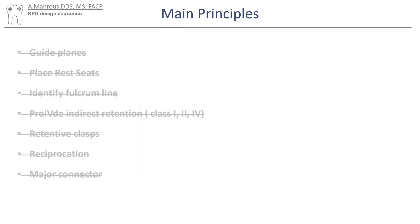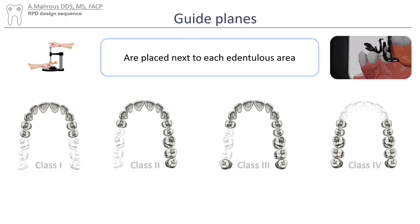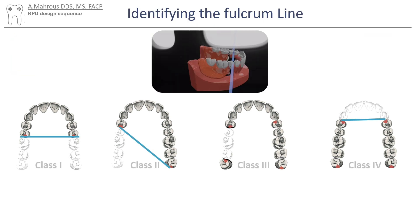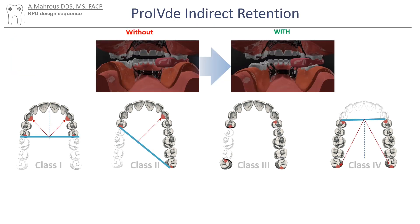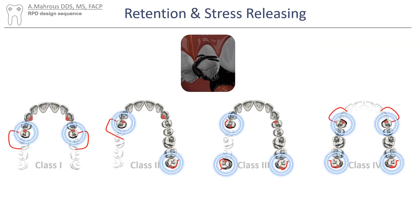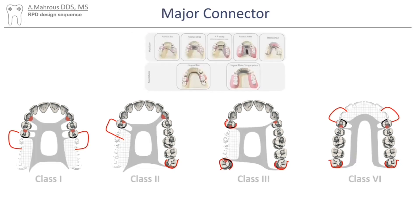With that, the steps of designing an RPD are complete. So let's do a little recap. The first thing that's added are the guide planes, followed by the rest seats, then identify the fulcrum line and then use it to determine where to place our indirect retainers. Then we add the retentive clasps, we add the reciprocal elements, and finally the major connector.